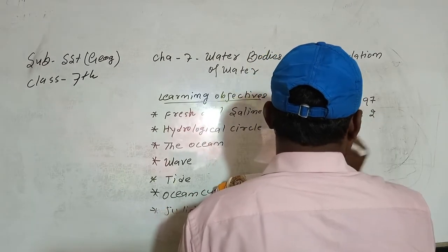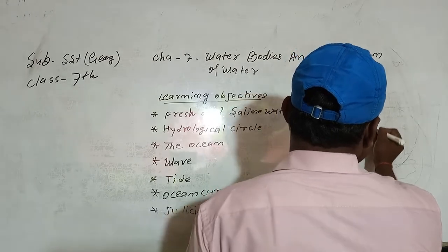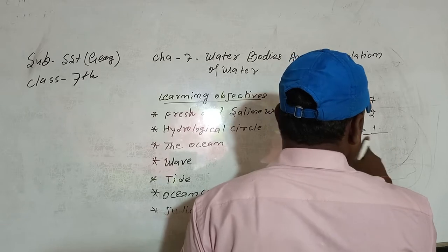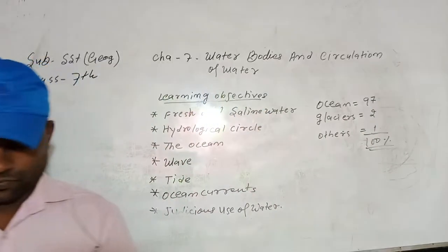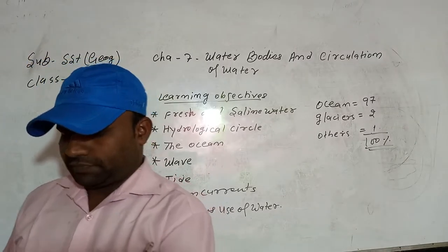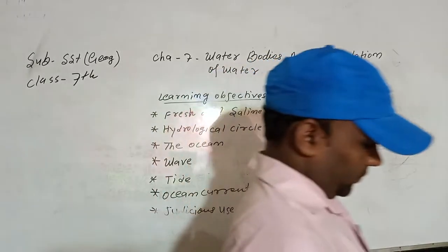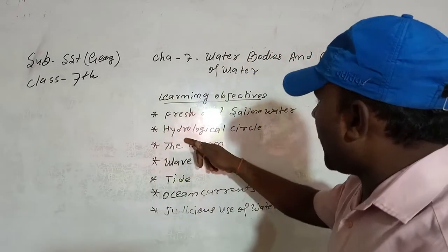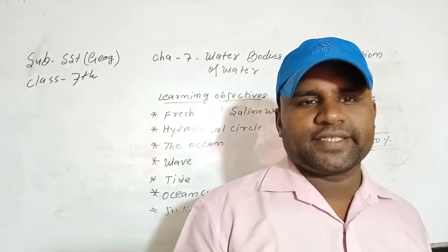Glaciers have 2% and other have 1%, now total find a sum of 100% water. Okay, but you know